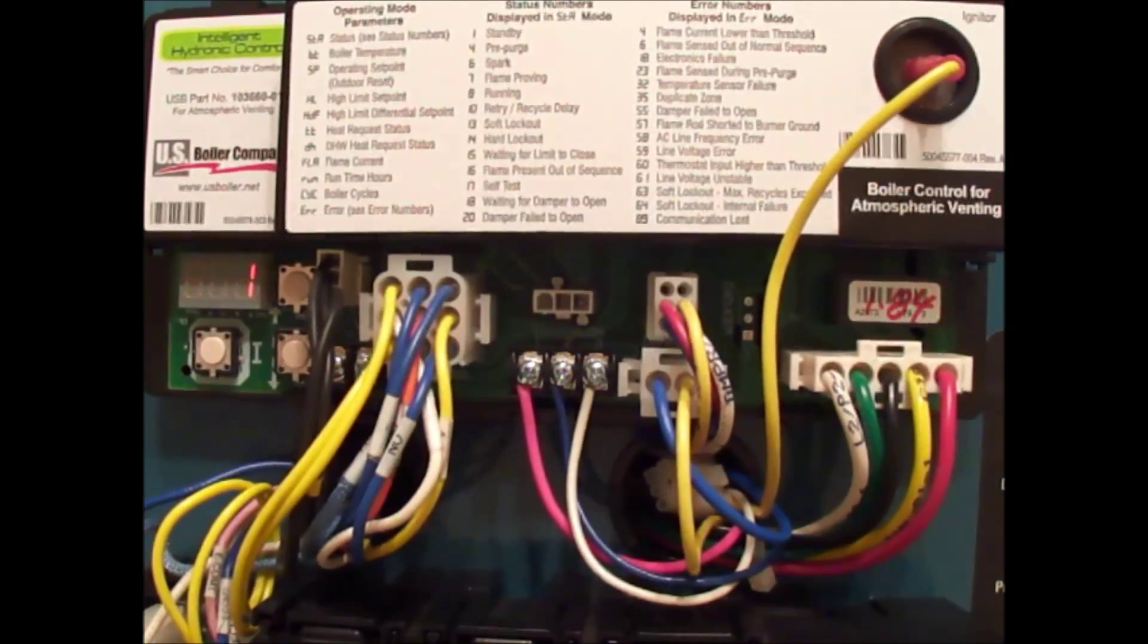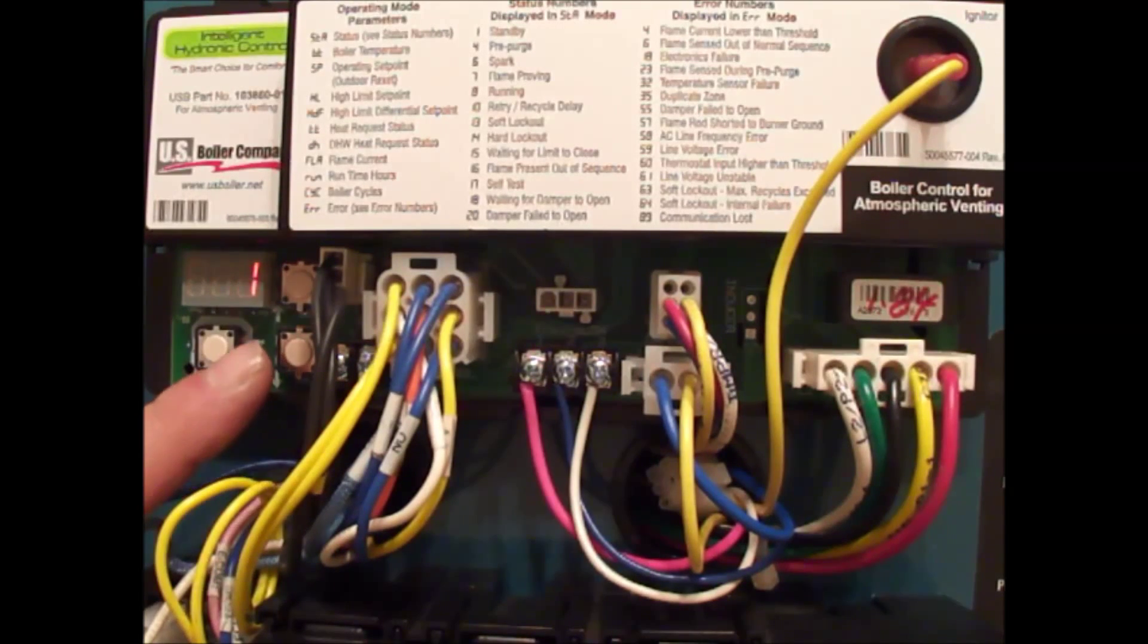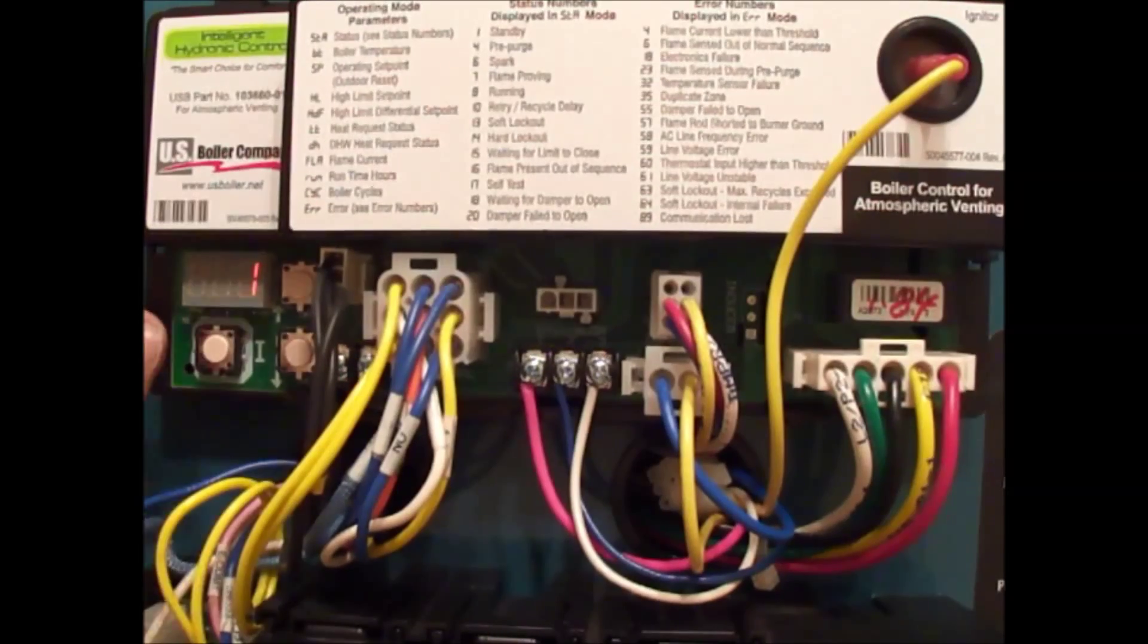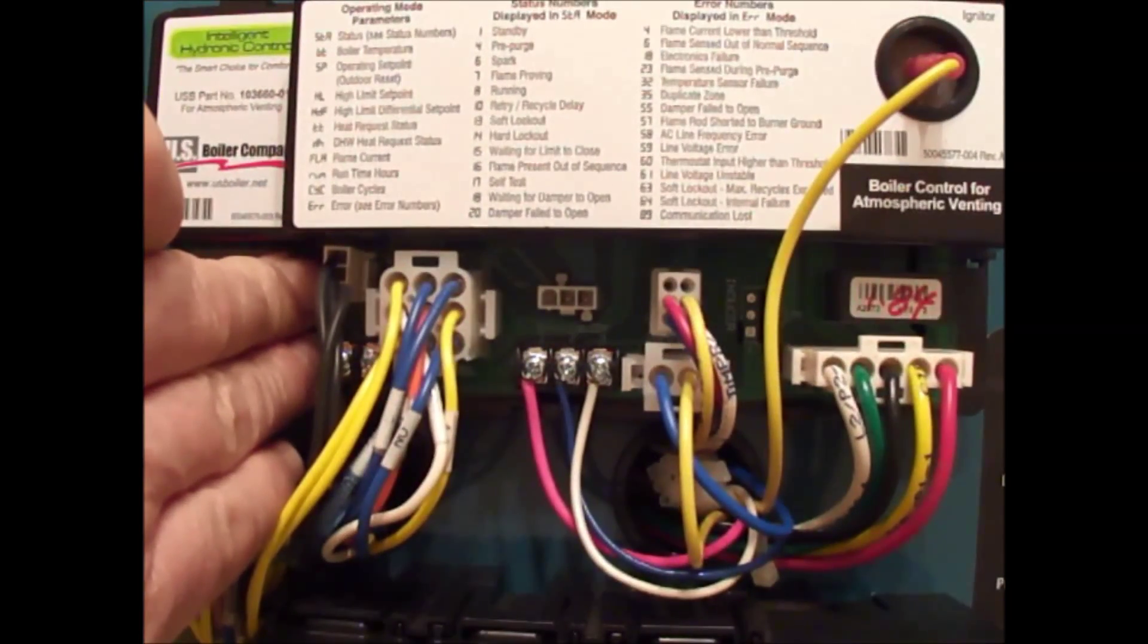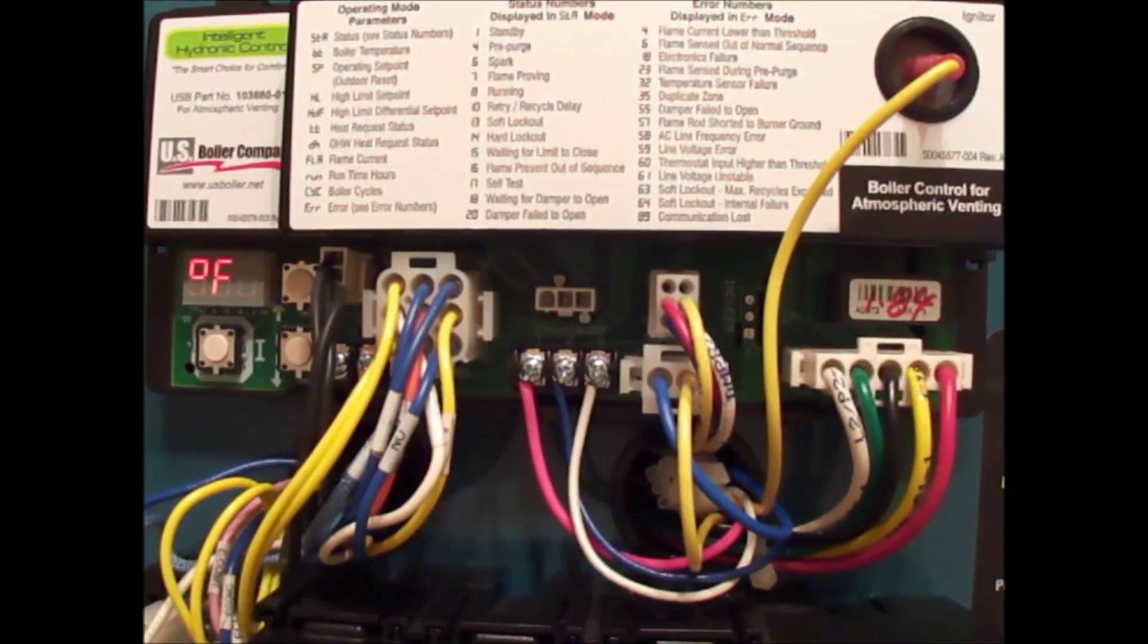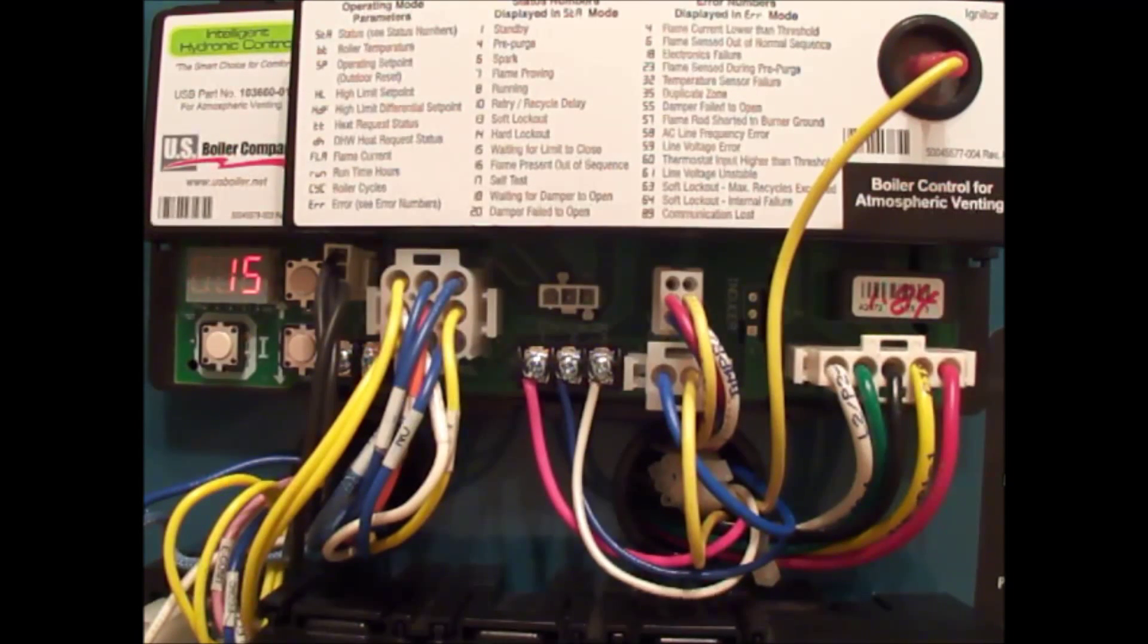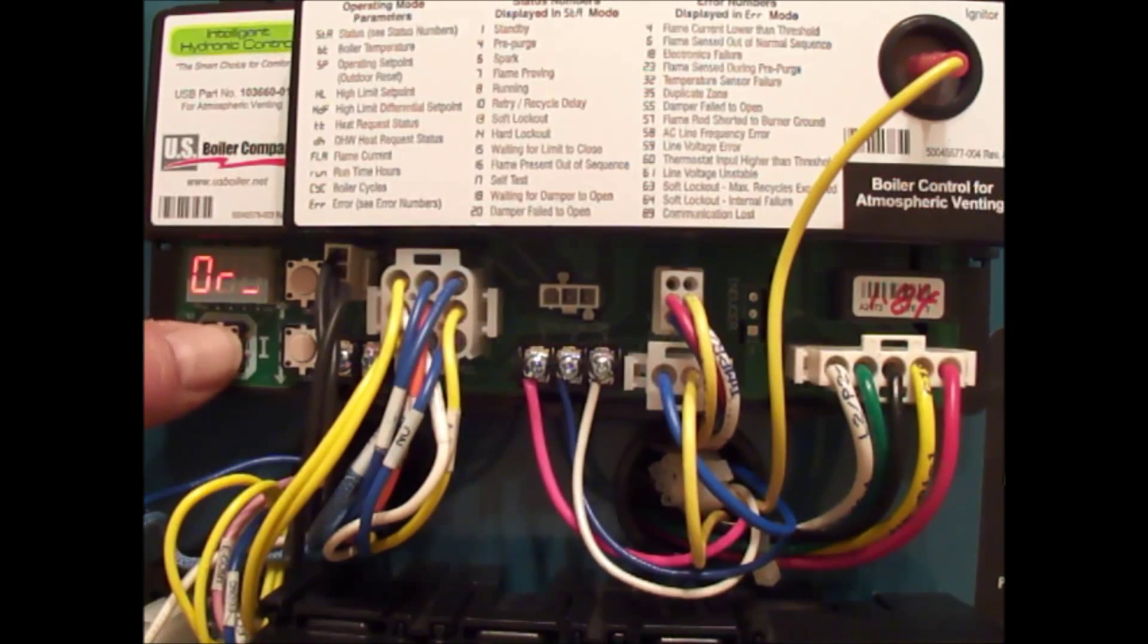Getting into parameters is just simply pressing all three buttons at the same time. When you press all three buttons, you're going to hold the buttons until you get an underscore in the third spot on this display. Now you see the underscore temporarily, and that tells us that we're in and we can actually view and change the parameters.